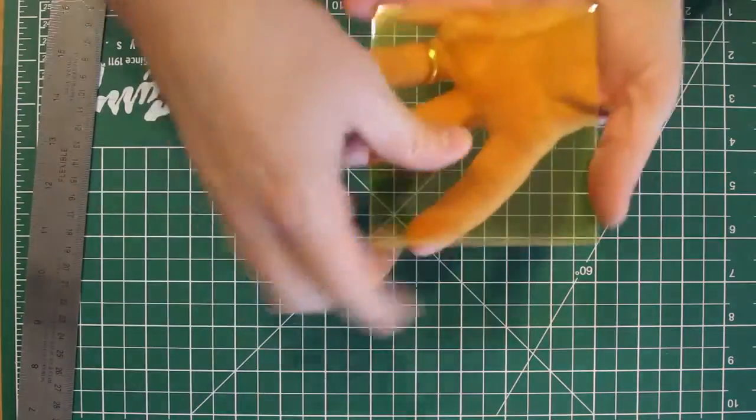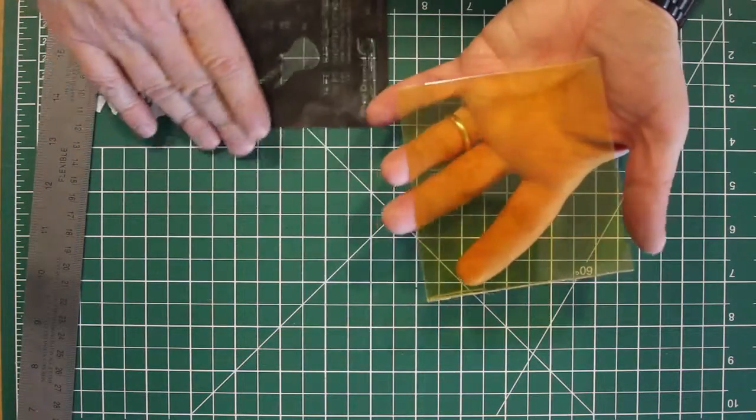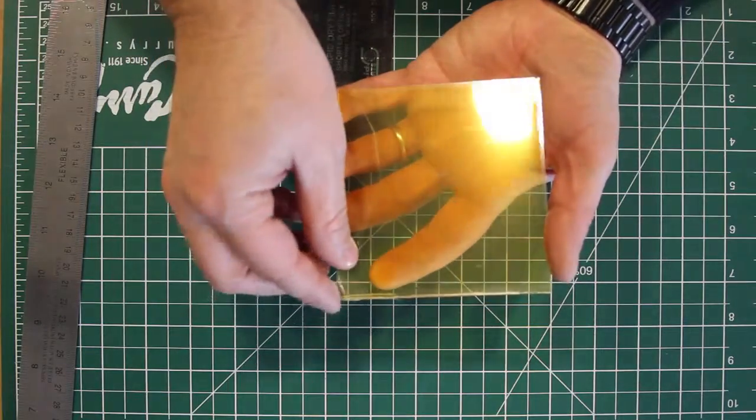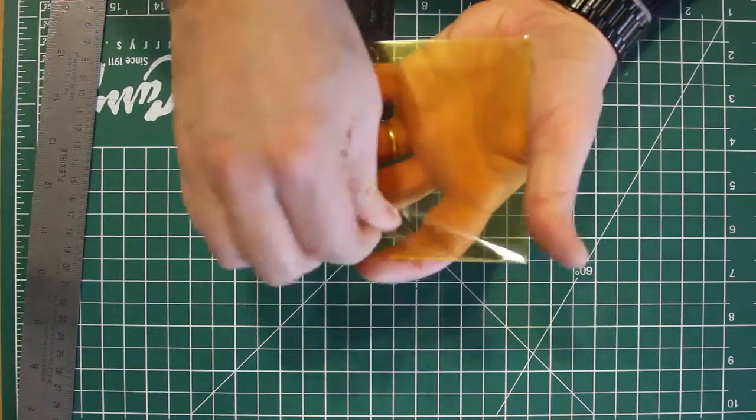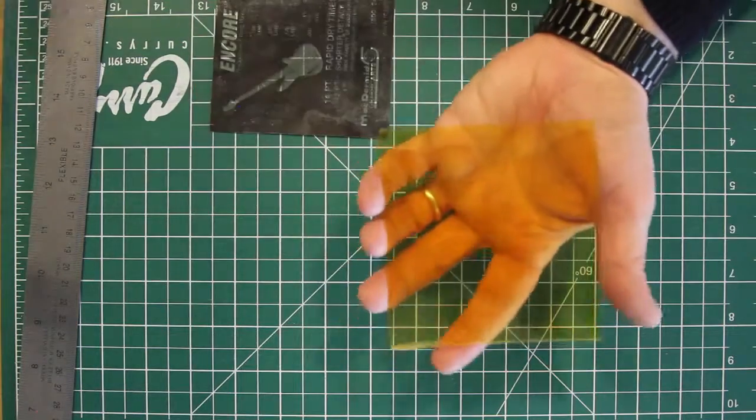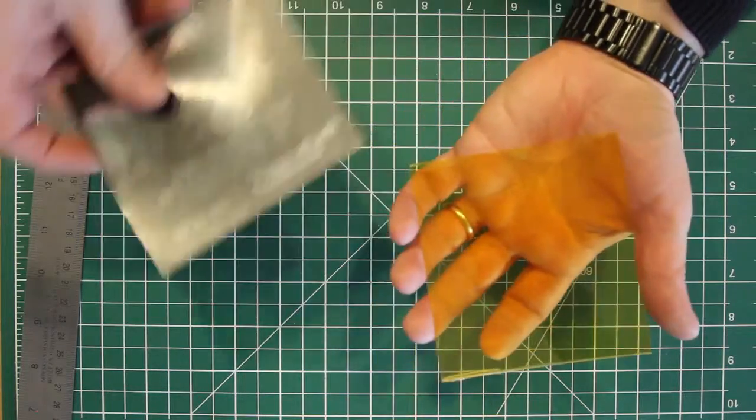So now in preparation for going to the exposing tray, what we want to do is find the corner of the material that covers the polymer, protects the polymer, and we're going to peel that off.